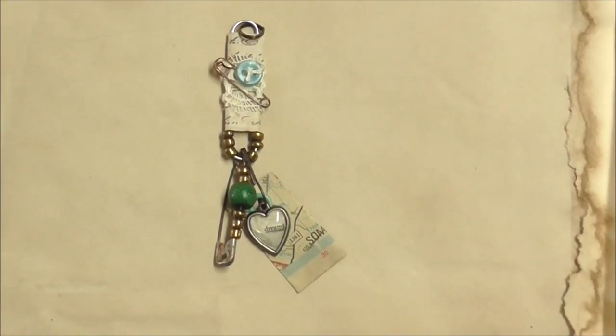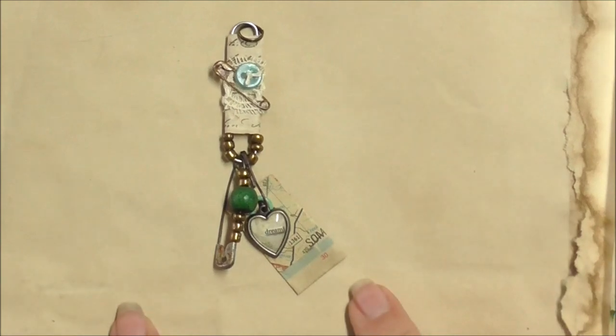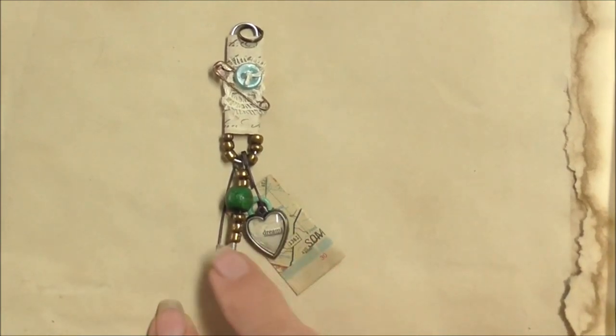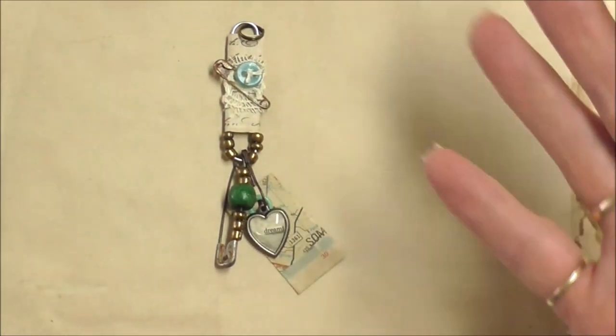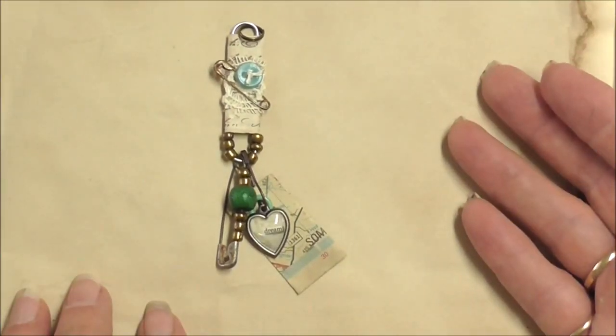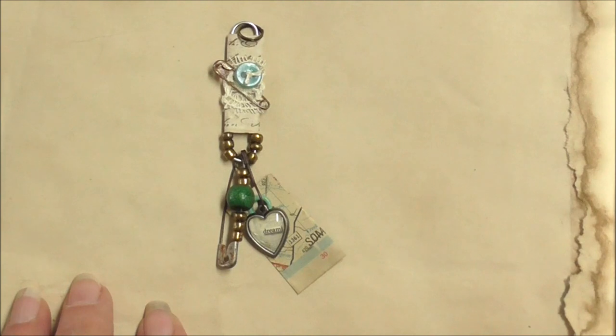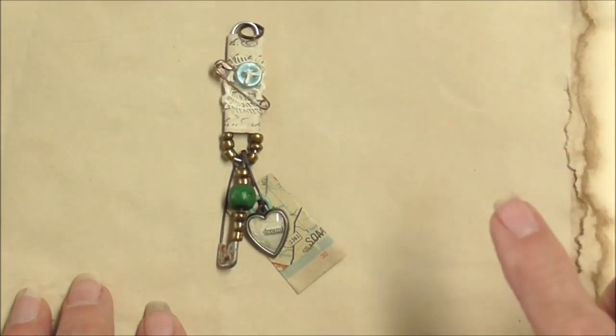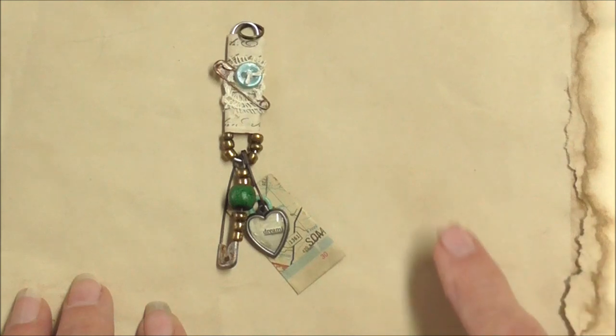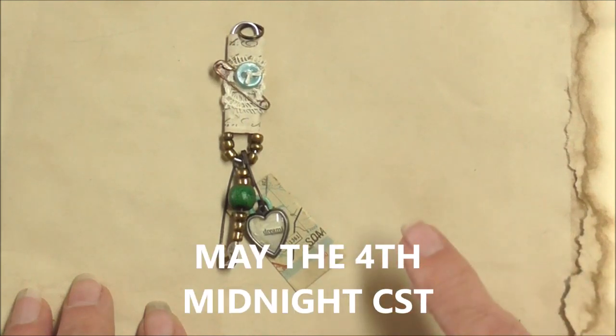Hey there, it's Nathalie, and at midnight tonight I'm gonna have a drawing to give away this altered paperclip charm. You can use it as a necklace or something in your journal. To qualify for the drawing at midnight Central Standard Time, I'm in Texas, and so if you can't tell by my accent anyway.